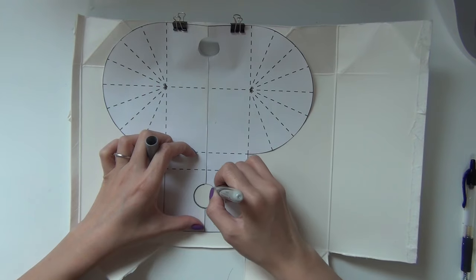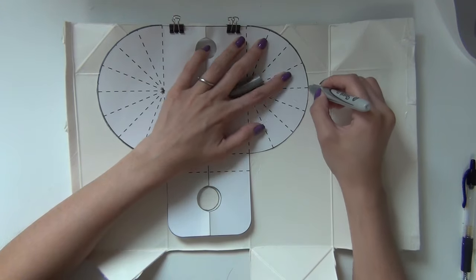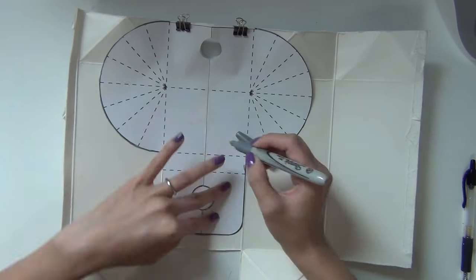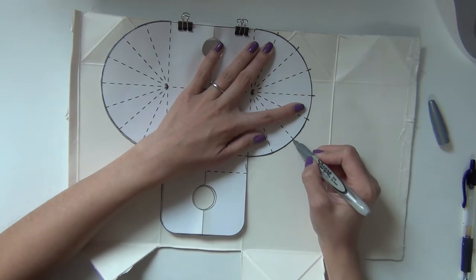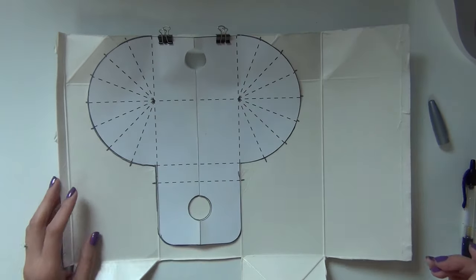So in order to have the pattern on our material I use a marker to draw the pattern onto the milk carton and here I'm using a sharpie. This way again we can protect our pattern.